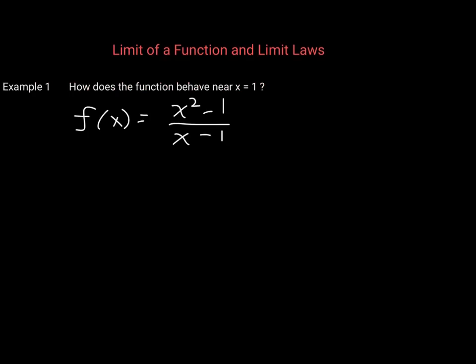The function I want us to consider is f(x) = (x² - 1)/(x - 1). This is a rational function. The question is: how does this function behave as x gets closer and closer to 1? You can see that this function is undefined at x = 1, because if x = 1, you get 1 minus 1 in the denominator — you end up dividing by zero, which is undefined. We cannot divide by zero, so this function is defined for any real number except x = 1. We cannot simply plug 1 in or evaluate our function at 1.